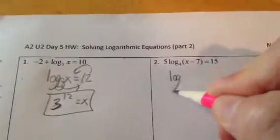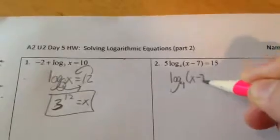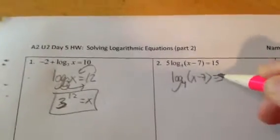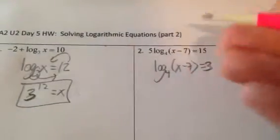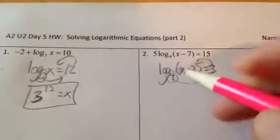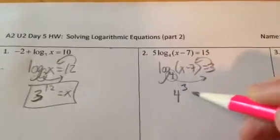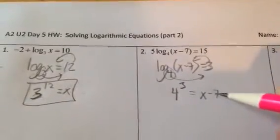So start by getting the log alone. Divide both sides by 5, so you have log base 4 of x minus 7 equals 3. Rewriting this in its exponential form. Again, if you've got a log equation, undo it by rewriting it in its exponential form. So you have 4 to the 3rd power equals x minus 7.